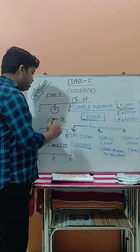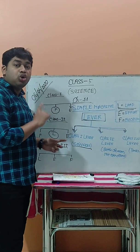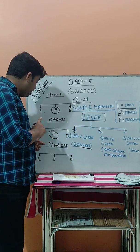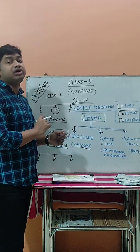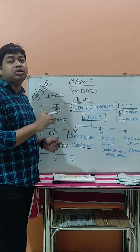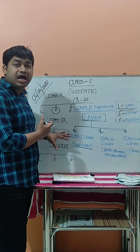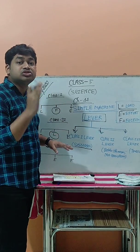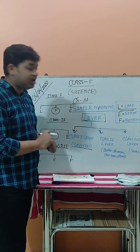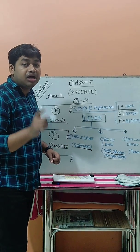The next is the Class 2 lever. In this type of lever, the load is located between the effort and the fulcrum. This type of lever is known as a Class 2 lever. Examples of the Class 2 lever are the bottle opener and nutcrackers.